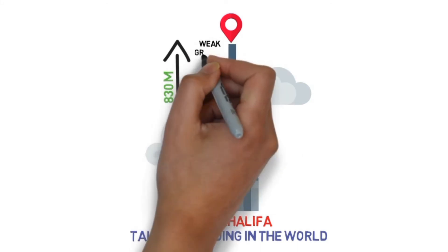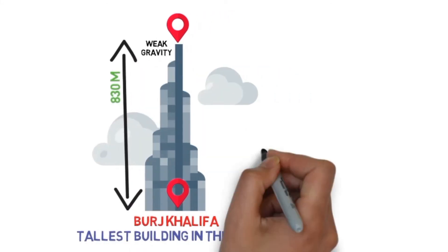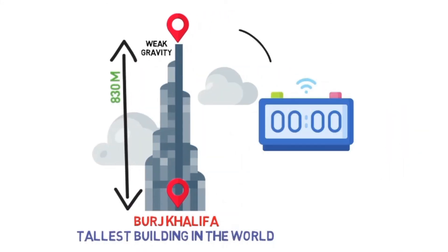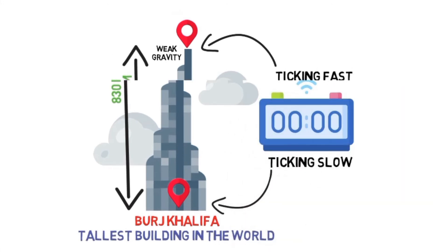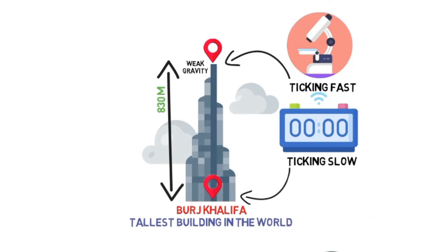Earth's gravity is a little bit weaker compared to the ground. If you have an atomic clock, you will notice that your clock is ticking fast compared to the clock on the ground. This difference is too small that we can't observe it easily.